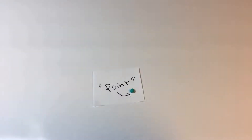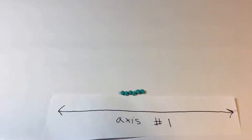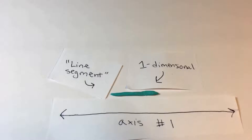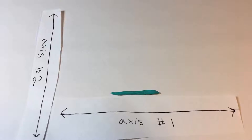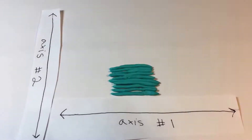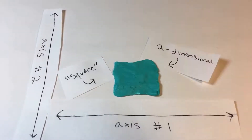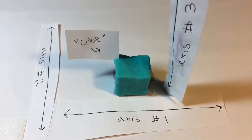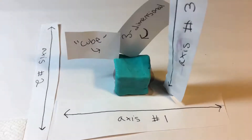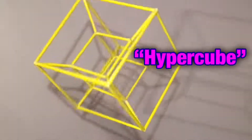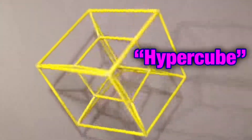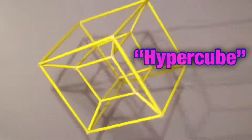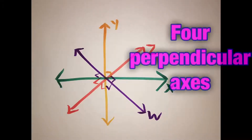This is a zero-dimensional point. Line an infinite number of them up along an axis to get a one-dimensional line segment. Line an infinite number of those up along a second axis to get a two-dimensional square. Stack an infinite number of those up along a third axis to get a three-dimensional cube. So, following this pattern, a four-dimensional hypercube is made by placing an infinite number of three-dimensional cubes along a fourth perpendicular axis.